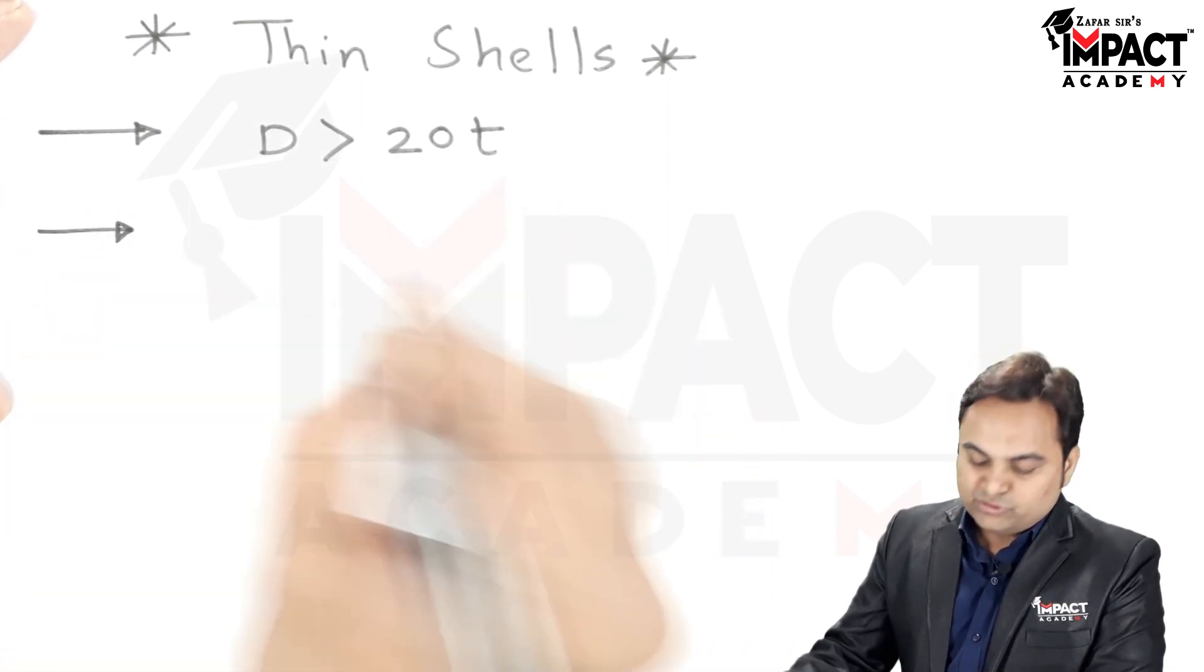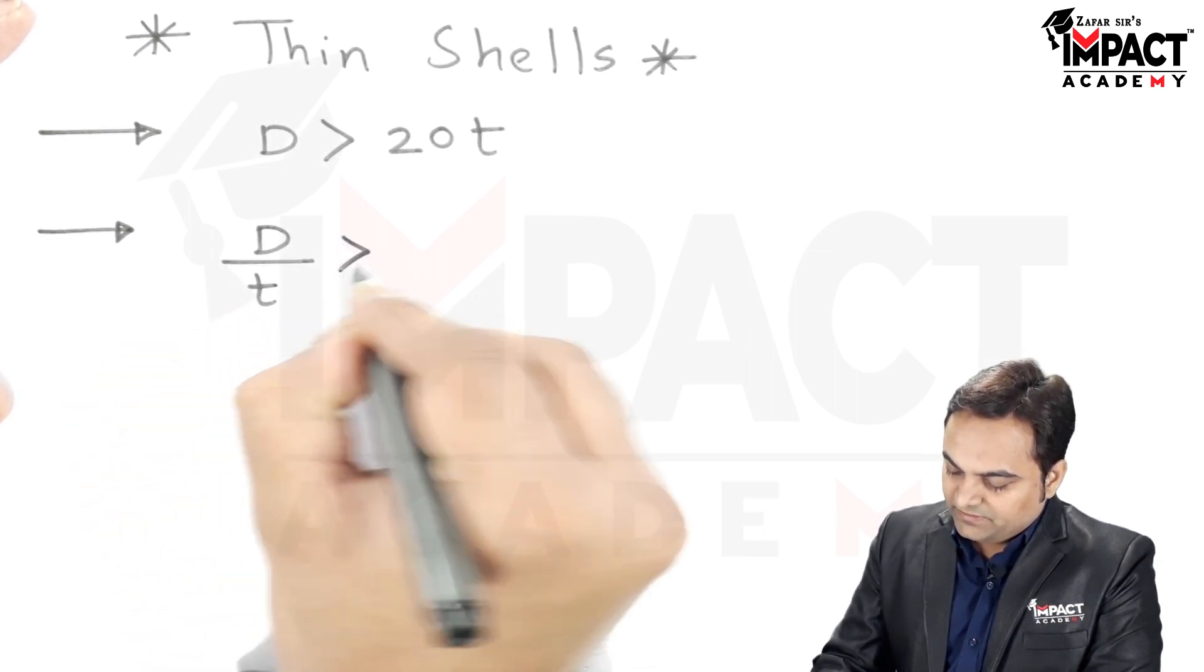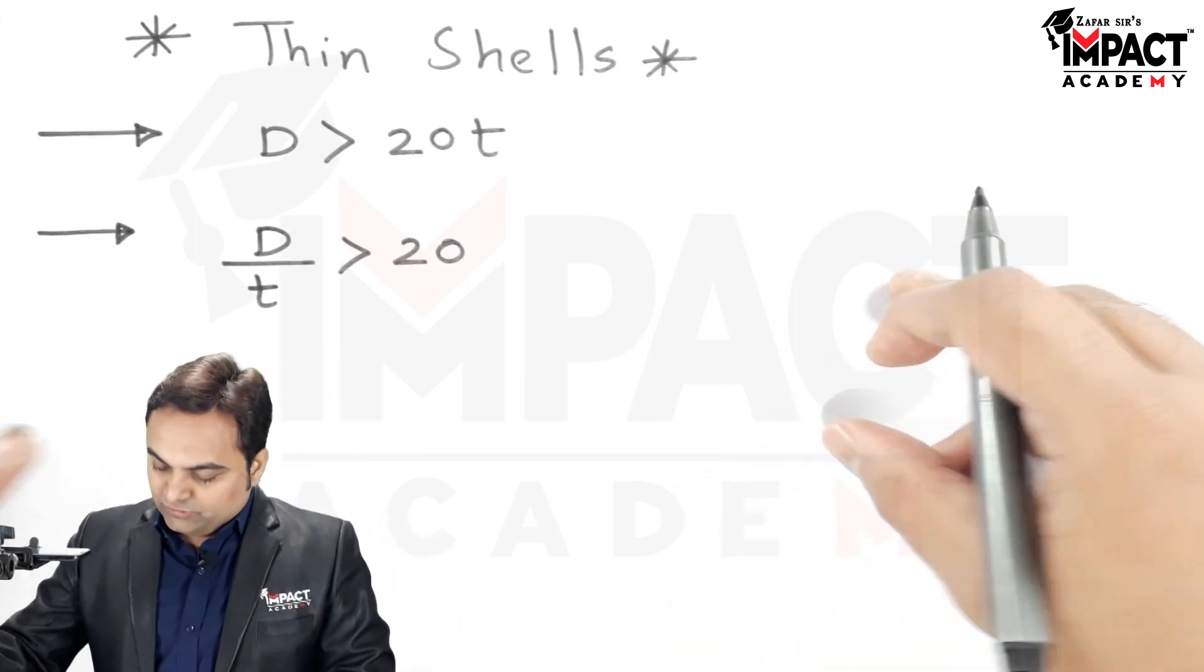Therefore, I can also say that diameter by thickness ratio, that is D/t, is greater than 20, and for that I'll draw the diagram as well.